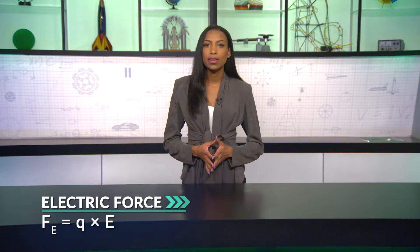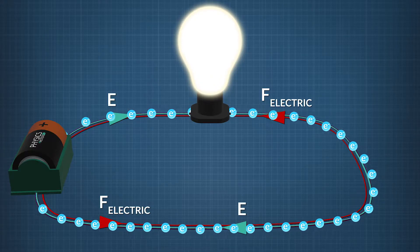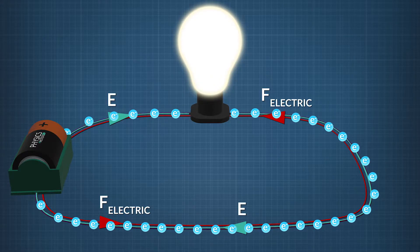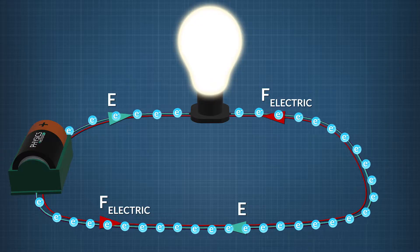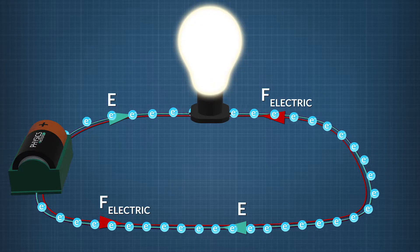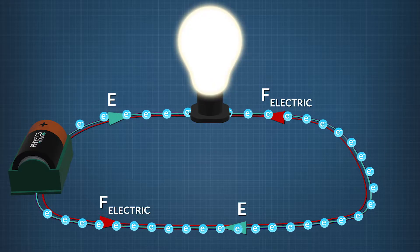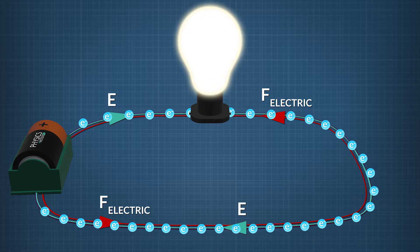Let's look at the formula for the relationship between electric force and electric field. F sub E, electric force, is equal to charge times electric field. This force is what pushes or pulls charge, making it flow. In a constant electric field, electrons will tend to flow in the same net direction despite the pinballing around. The overall motion is in the direction of the electric force.